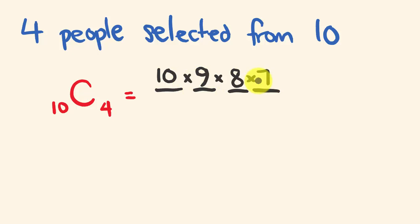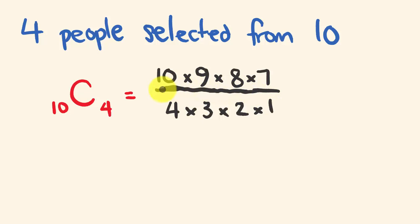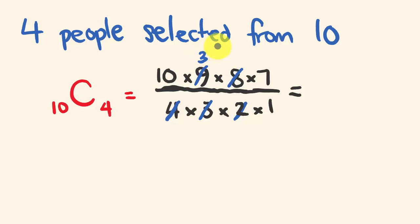That top part — 10 times 9 times 8 times 7 — is the n factorial over (n minus r) factorial part. Then we divide by 4 times 3 times 2 times 1. Cancelling: 8 is the same as 4 times 2, and we can divide 9 by 3 to get 3. So we get 10 times 3 times 7, which is 210. There are 210 different ways of selecting four people from ten.